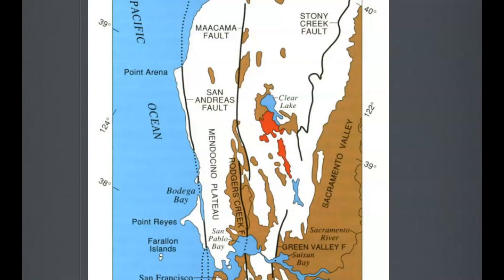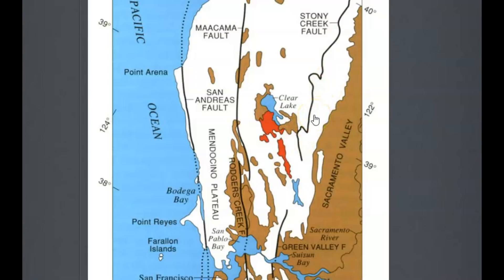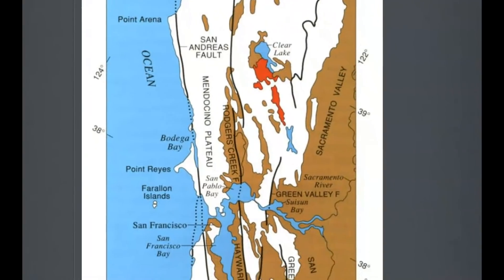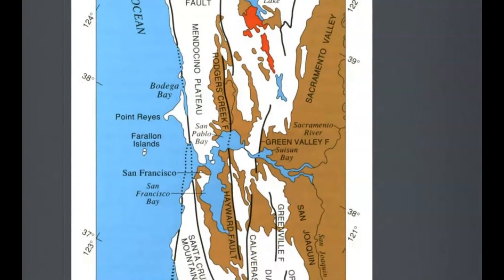This image here comes from EarthJ.com. Here you can see the St. Andreas Fault Zone, the Makama Fault Zone, the Stony Creek Fault Zone, and over here we have the Bartlett Springs Fault Zone. See how it goes all the way down to the Rogers Creek area. The San Francisco Bay Area, the Hayward Fault, etc.